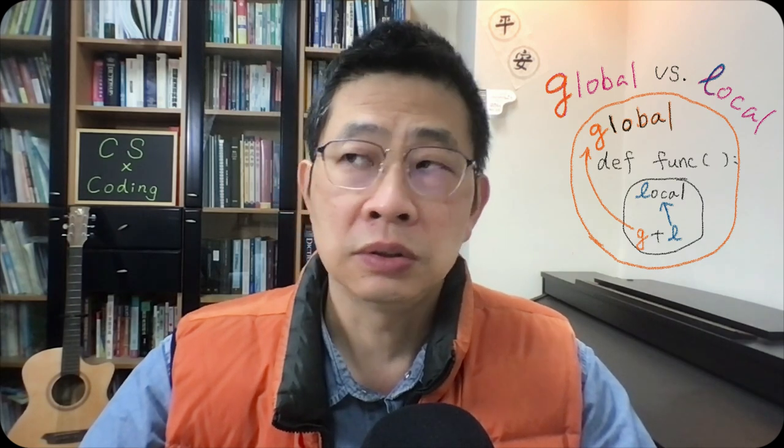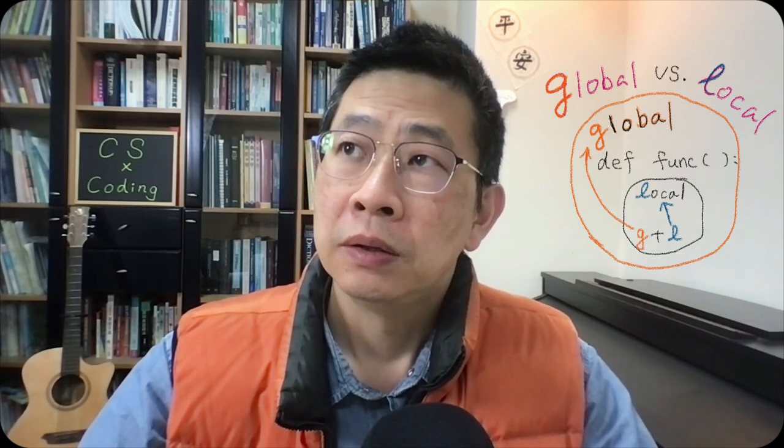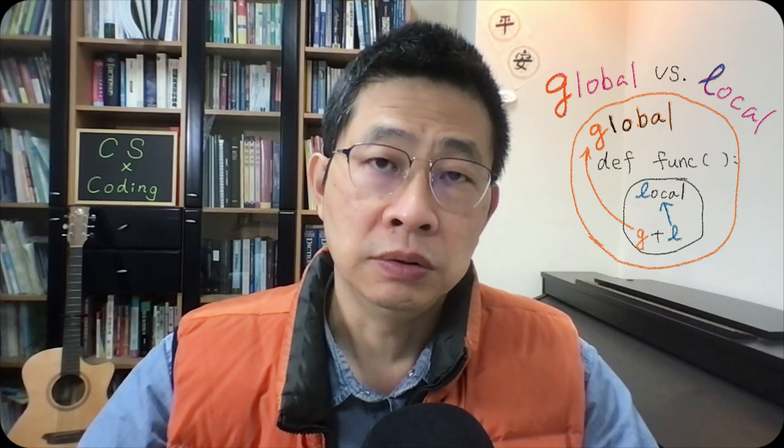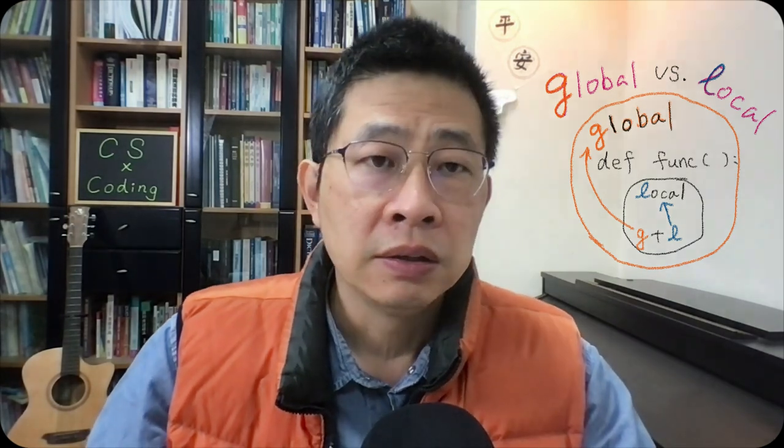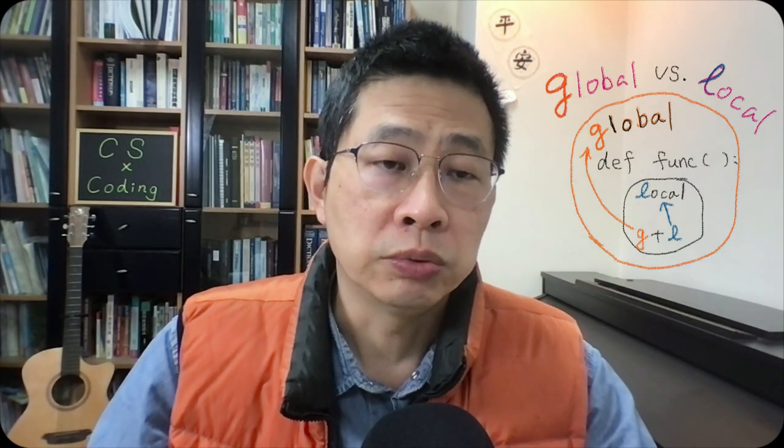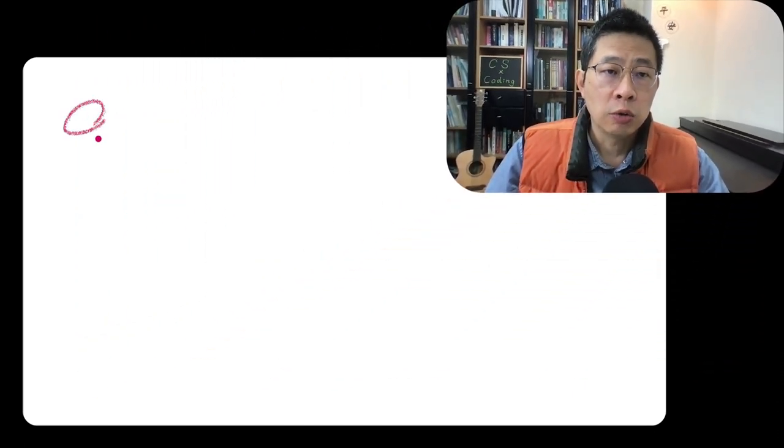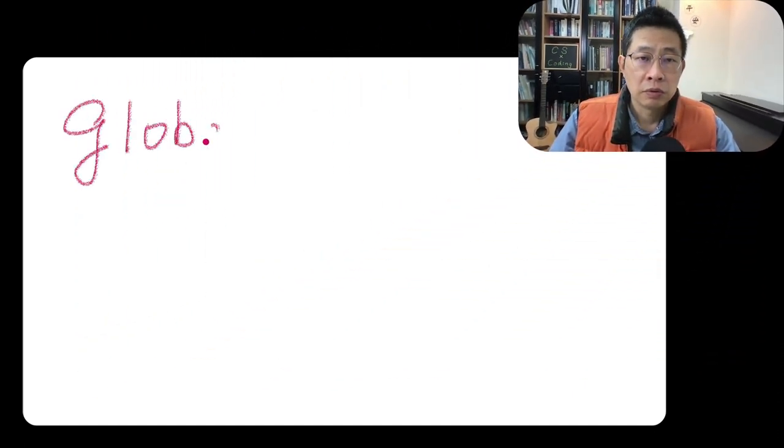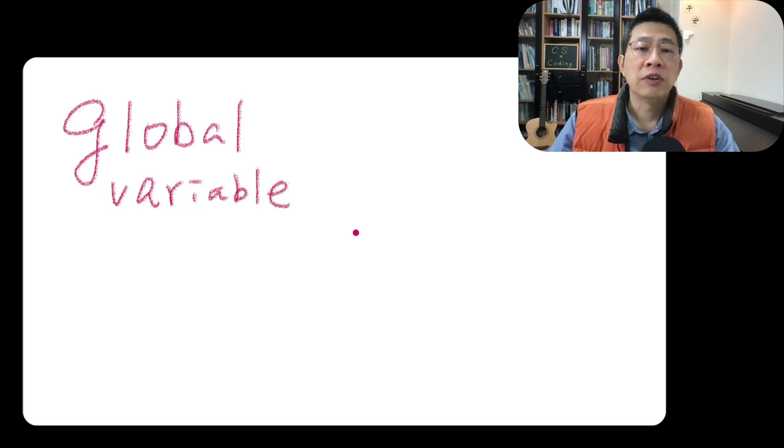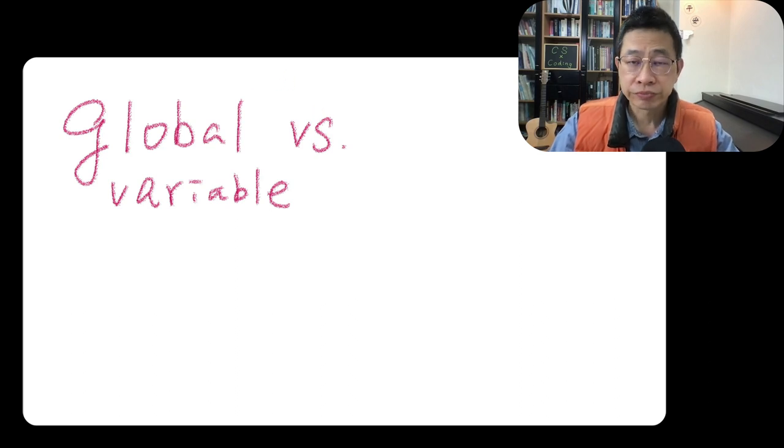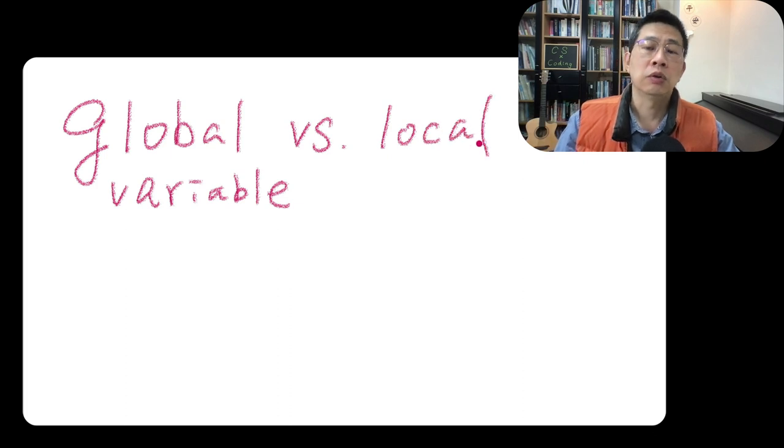So you can do a lot of things, and even we have done the function. So what is variable? Of course we know, but what is the global variable versus local? We know variable, right? A name to store the data of value, versus local variable.